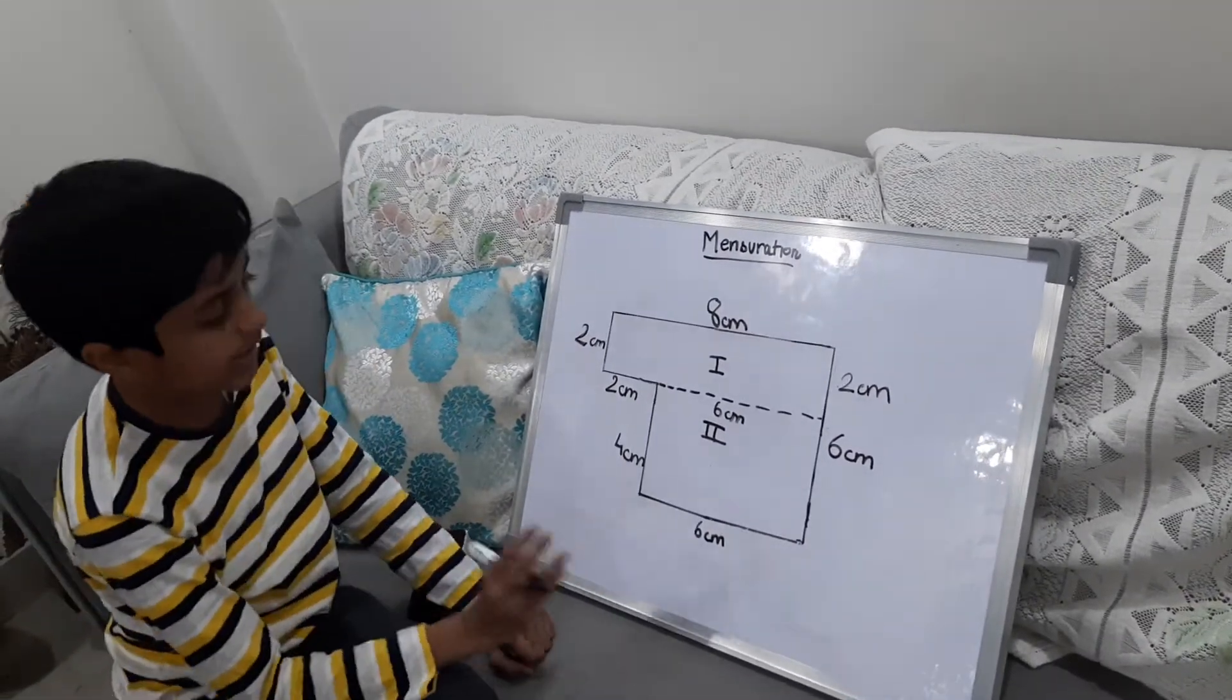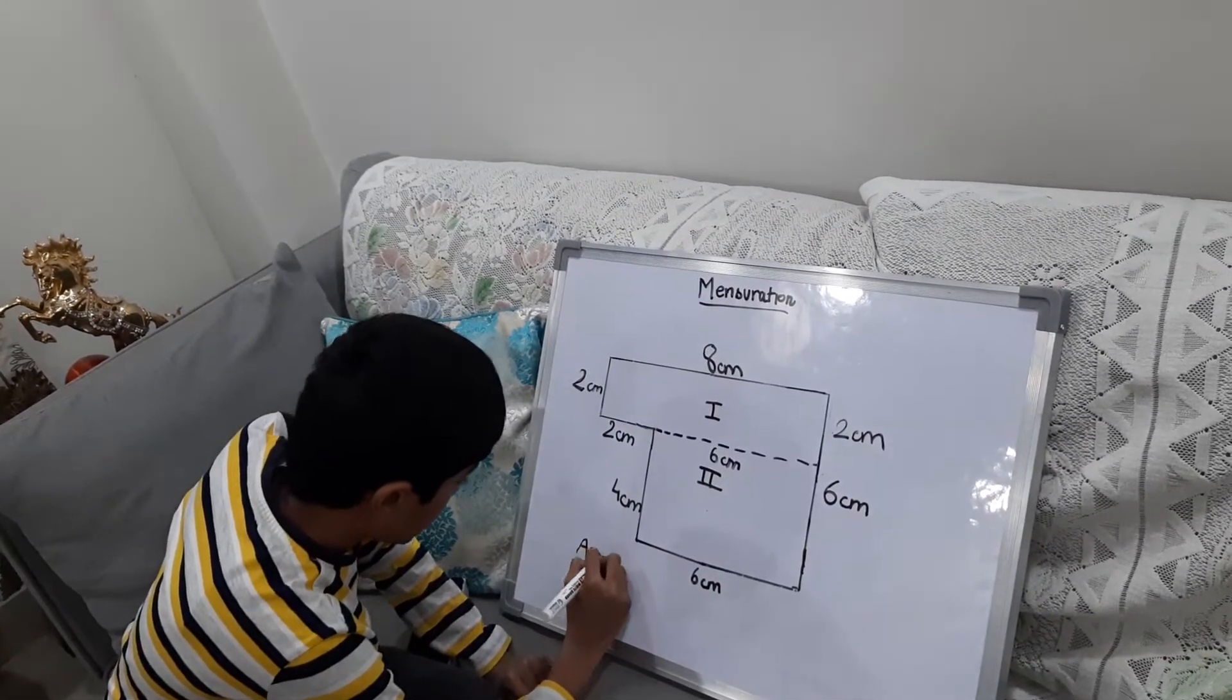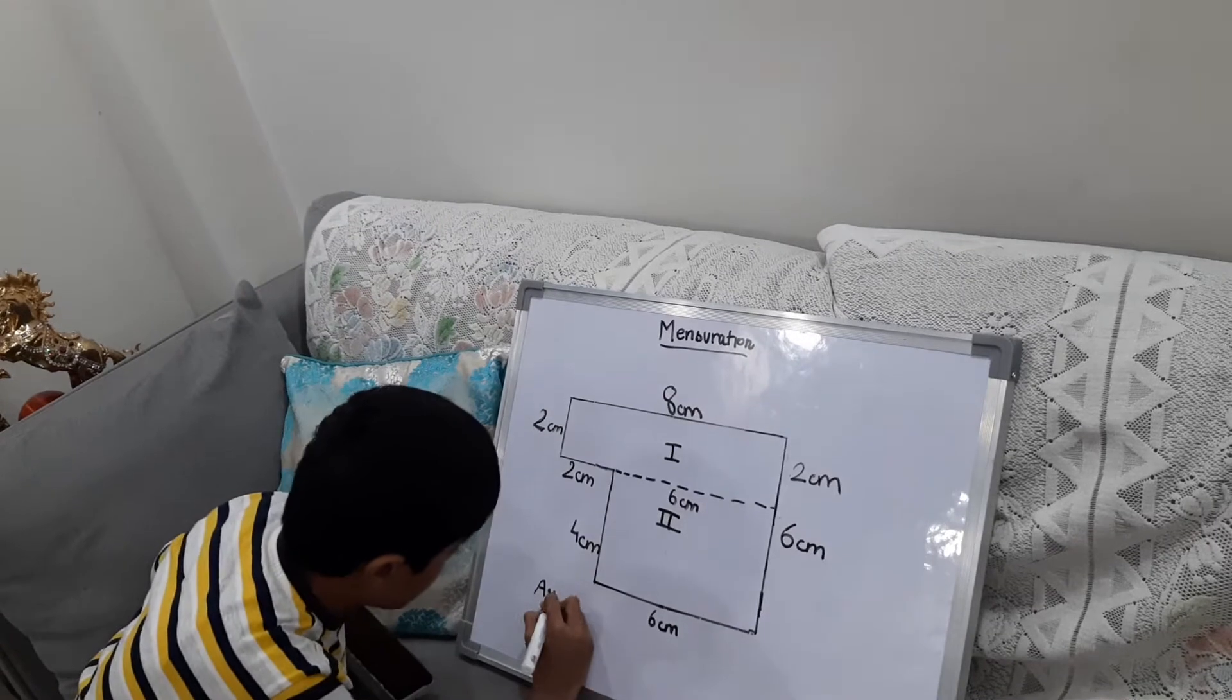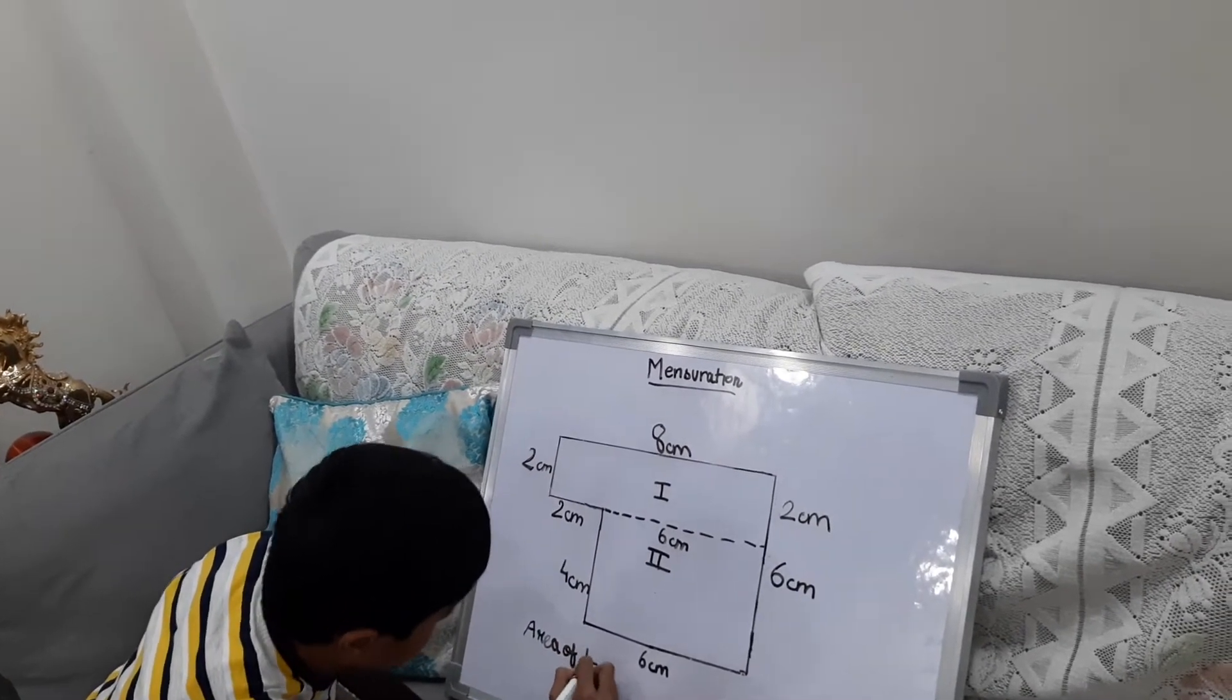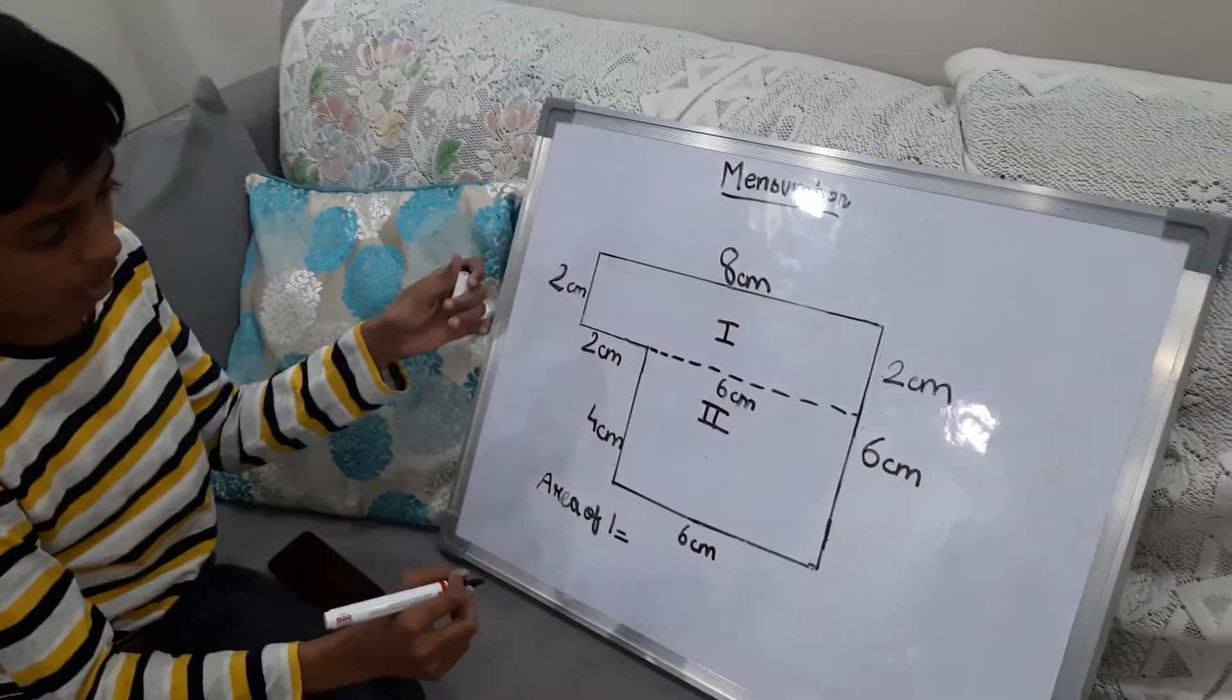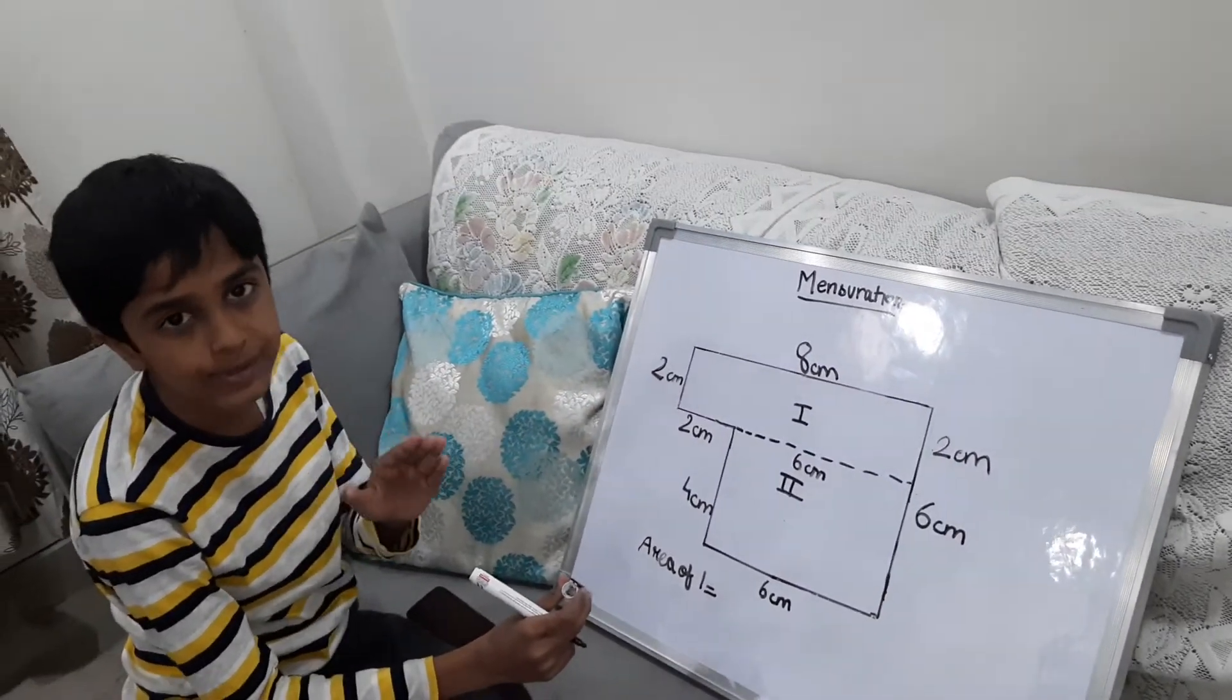Now we will find the area. Area of 1 is equal to 8 into 2. We use this formula because to find the area of a rectangle, we do L into B.